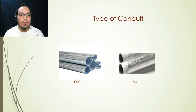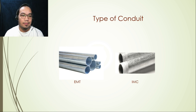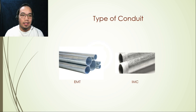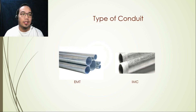Next, we'll show the different types of conduit that contractors mostly use in their design or installation. One type is EMT, another is IMC, and the third is PVC. These three types of conduits are mostly used in construction or installation of fire alarm systems.